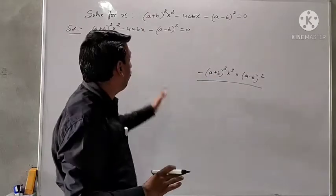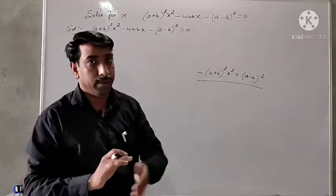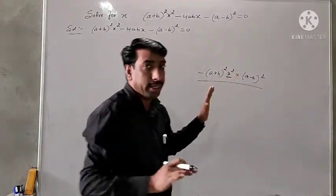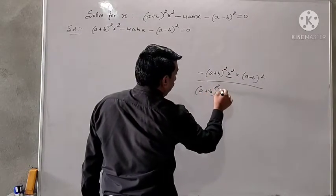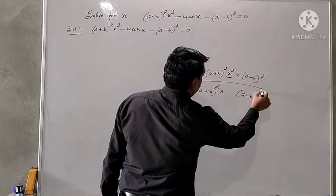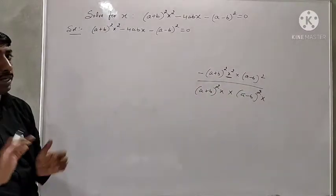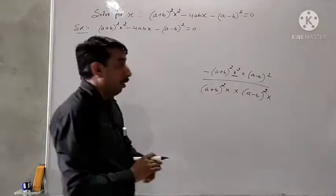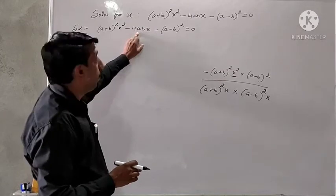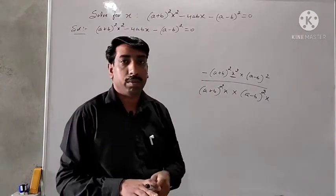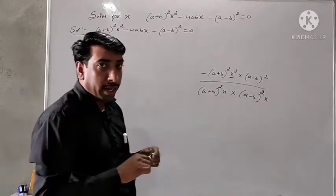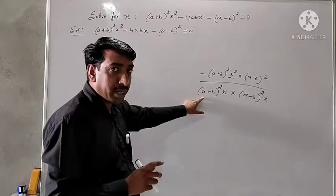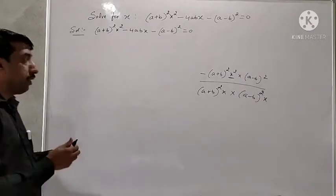We need to split the middle term into two parts. When we add them back we should get negative 4ab times x. The two parts can be (a plus b) whole square times x and (a minus b) whole square times x. One of them must be negative and one positive. Since (a plus b) whole square expands to a squared plus b squared plus 2ab, and (a minus b) whole square expands to a squared plus b squared minus 2ab, together minus 2ab and minus 2ab give minus 4ab, so we make the (a minus b) whole square term negative.